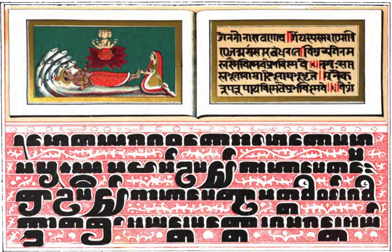A slightly freer translation by Acharya Buddharakkhita: 'Mind precedes all mental states. Mind is their chief; they are all mind-wrought. If with an impure mind a person speaks or acts, suffering follows him like the wheel that follows the foot of the ox.'